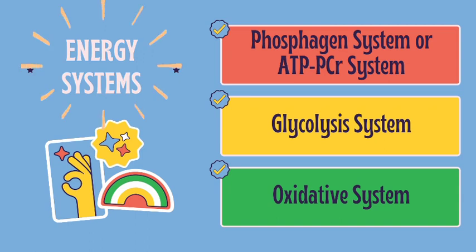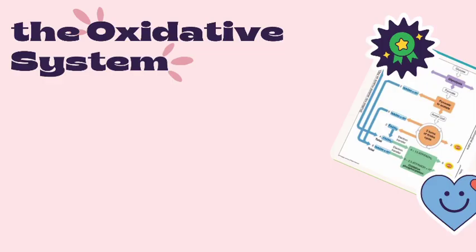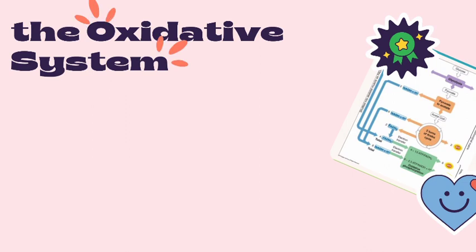The oxidative system is the primary source of ATP at rest and during low-intensity exercise. In today's discussion, we will give spotlight to what is the oxidative system. Moving on — what is the oxidative system?